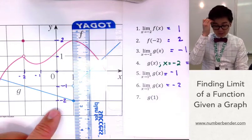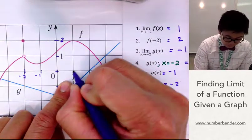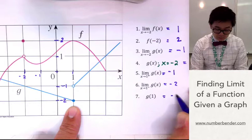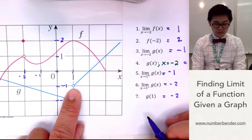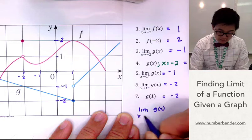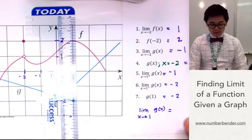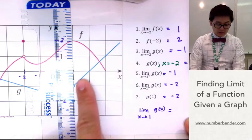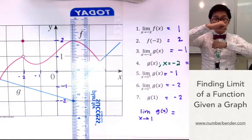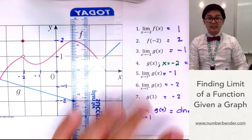For number 7, we're looking for g of 1 — the exact value at x equal to 1 on the blue graph. The answer is negative 2 because negative 2 is a closed circle, while the point at negative 1 is undefined. For number 8, the limit of g of x as x approaches 1 is no longer one-sided: from the right it's negative 1 and from the left it's negative 2. Since they don't connect, the limit does not exist.